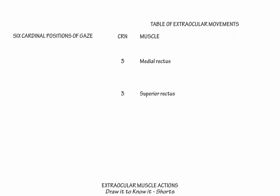Here we will draw the six cardinal positions of gaze and create a table for the complete extraocular muscle actions. Cranial nerve 3 innervates the majority of the extraocular muscles: the medial rectus, superior rectus, inferior rectus, and inferior oblique.